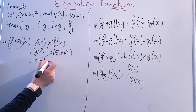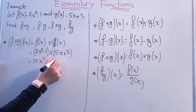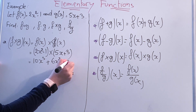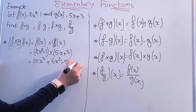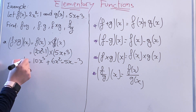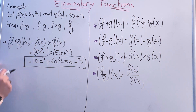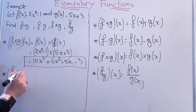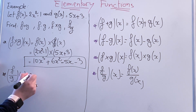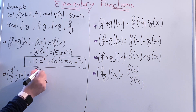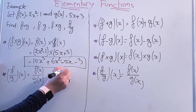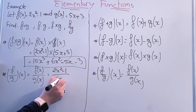For f times g of x, we multiply the expressions: 2x squared multiplied by 5x plus 3, which gives 10x cubed plus 6x squared, minus 1 multiplied by 5x equals minus 5x, and minus 1 multiplied by 3 equals minus 3. For f divided by g of x, we divide: f(x) over g(x) equals 2x squared minus 1 over 5x plus 3.